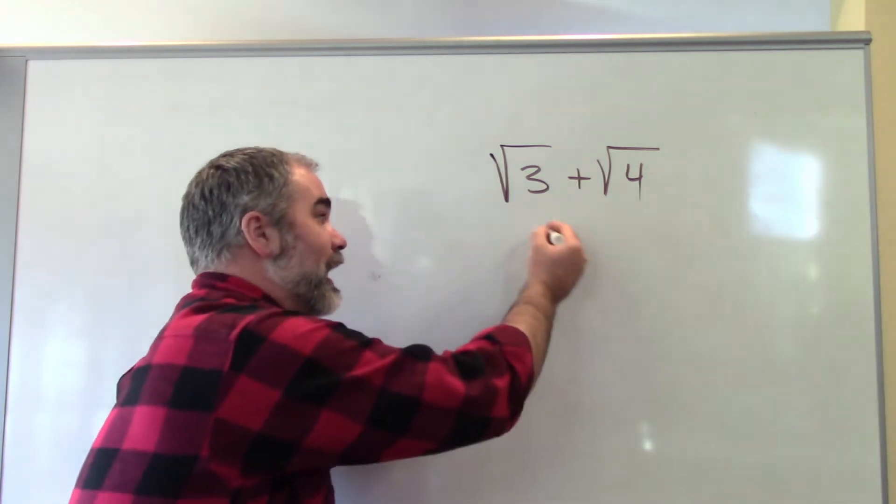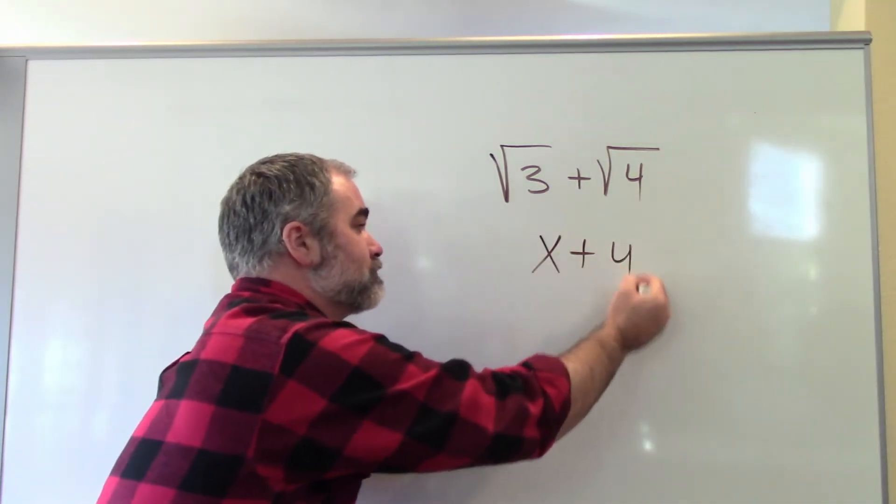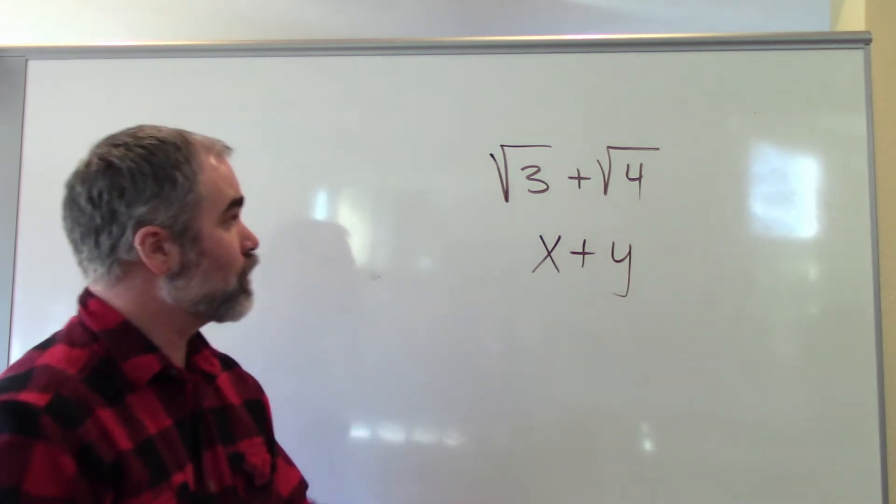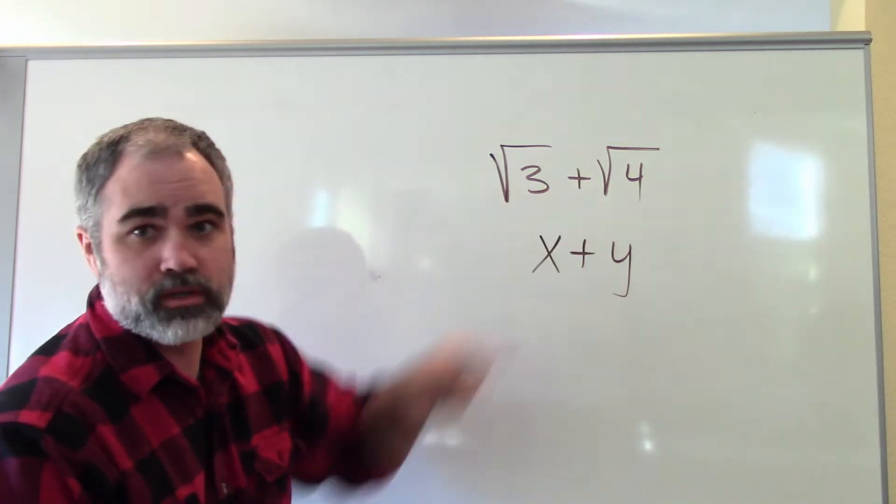In the same way that you can't add x and y together, and get w or something, I can't combine square roots that have different numbers on the inside.